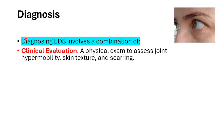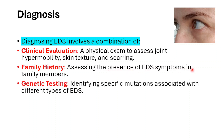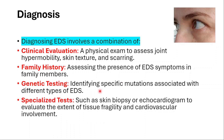While diagnosing it, we should combine clinical evaluation and physical exam to assess joint hypermobility, skin texture, and scarring. Family history, assessing the presence of EDS symptoms in family members. And genetic testing, identifying specific mutations associated with different types. Specialized tests, such as skin biopsy or echocardiogram, to evaluate the extent of tissue fragility and cardiovascular involvement.